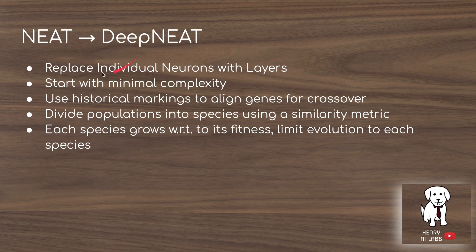Going from NEAT to DeepNEAT, you replace the neurons with layers and use basically the same algorithm: initialize with minimal complexity, use historical markings to align genes for crossover, and speciate populations using a similarity metric so they only compete within their species, limiting evolution to each species. Speciation allows networks that are trying to design more complexity to not be immediately penalized for it — they can develop it and either succeed or not, without having to compete with the entire population all at once.